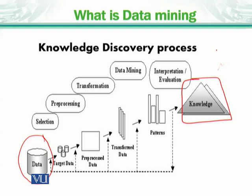To move from data to knowledge, first we have to identify our target data. For example, if we talk about YouTube videos, we look at data relevant to videos — such as comments and annotations, where annotation describes the video and comments are what people write about it. The target data becomes a specific YouTube video. After that, we do pre-processing, which means data cleaning — for example, if a video is low quality, we try to increase its quality.